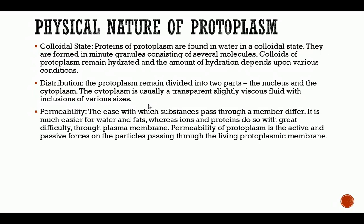The protoplasm remains divided into two parts: the nucleus and the cytoplasm. The cytoplasm is usually a transparent, slightly viscous fluid with inclusions of various sizes — including ribosomes, the Golgi apparatus, mitochondria, chloroplast, and others.